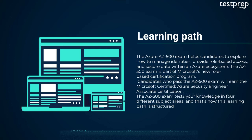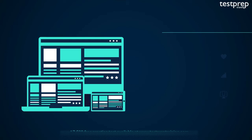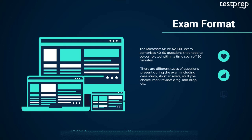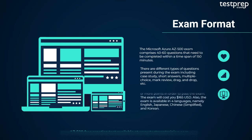The AZ-500 exam tests your knowledge in four different subject areas, and that's how this learning path is structured. The Microsoft Azure AZ-500 exam comprises 40 to 60 questions that need to be completed within a time span of 150 minutes. There are different types of questions including case study, short answers, multiple choice, mark review, drag and drop, etc. A candidate has to score a minimum of 700 or more points to pass the exam. The exam will cost 165 US dollars and is available in four languages: English, Japanese, Chinese, and Korean.